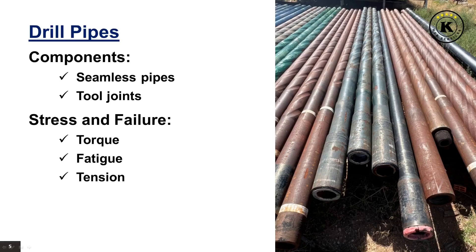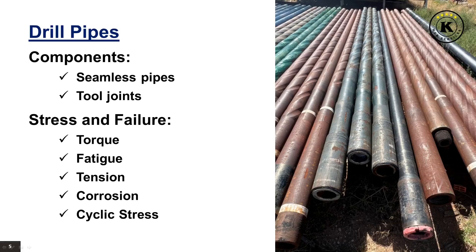Tension forces on drill pipes can be significant during drilling operations; ensuring that the pipes can withstand these forces without compromising structural integrity is imperative. Corrosion, caused by exposure to harsh drilling environments, threatens pipe integrity, making corrosion-resistant materials and control measures crucial. Cyclic stress, induced by the repetitive nature of drilling, emphasizes the importance of materials with high fatigue resistance. Understanding and addressing these stress and failure factors are pivotal in maintaining the reliability and longevity of drill pipes during oil and gas exploration.